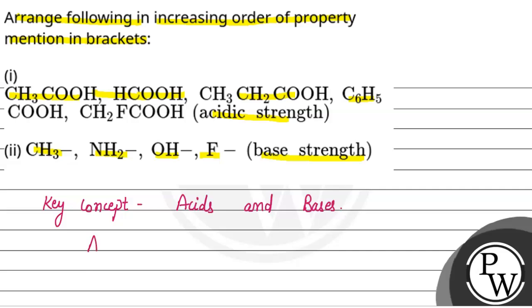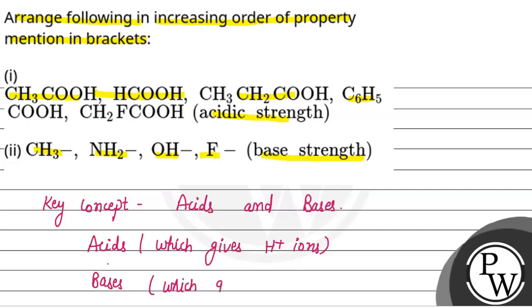Acids कौन से होते हैं? Which give H-positive ions in the solution. और bases कौन से होते हैं? Which give OH-negative ions in the solution.